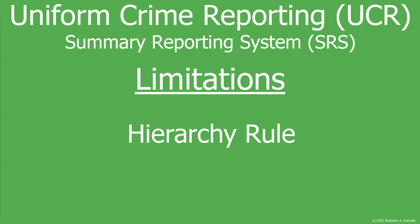The Hierarchy Rule is where only the most serious offense is counted if more than one occurred. So for example, if a person robs a bank, beats a teller with a weapon, then shoots and kills a security guard while making an escape in a stolen car, multiple crimes have been committed, but only the murder will be counted. This obviously undercounts the amount of crime that is recorded for all crimes except for homicide.